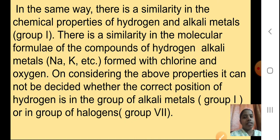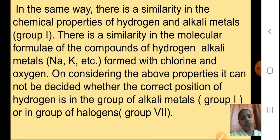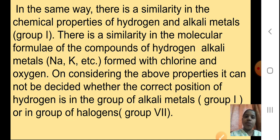So the demerits were: two elements had the same whole number atomic masses making placement difficult; isotopes did not get any place in the table; the increasing order of atomic masses was not continuous; and the position of hydrogen created a problem.